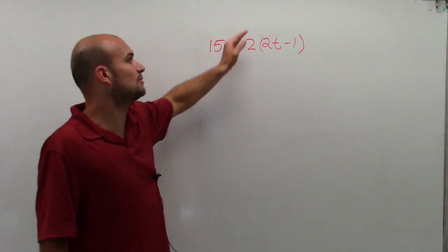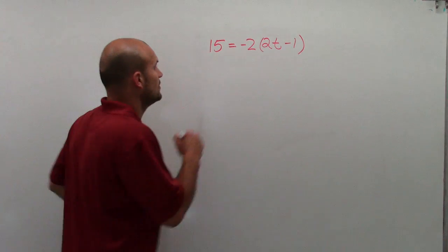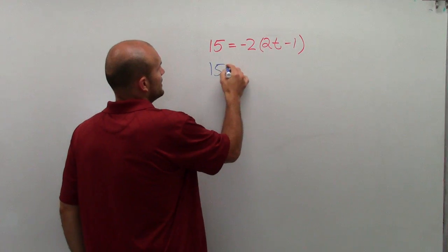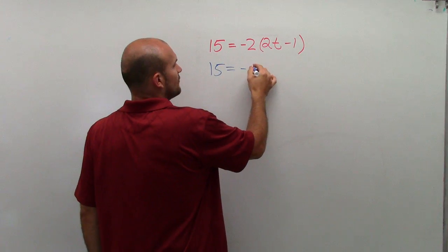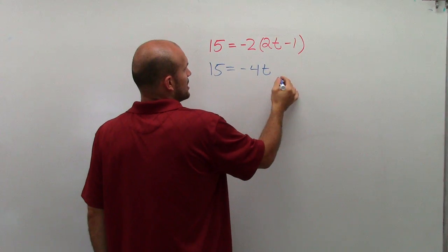So I'm going to continue with this. I am going to distribute this negative 2 by using the distributive property and then I'm just going to solve it using the operations that we've been talking about.